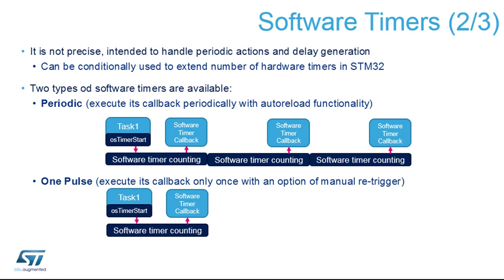The second mode is one-pulse. It simply starts the counter and after a given delay calls the callback, then removes the callback from the timer task so it is no longer called. Of course you can restart it by software; it is called just once automatically.